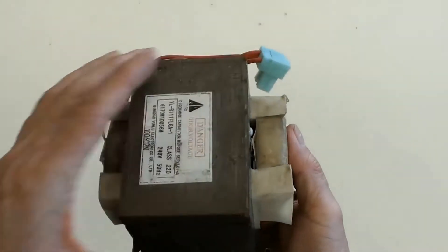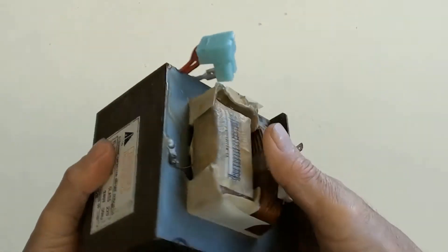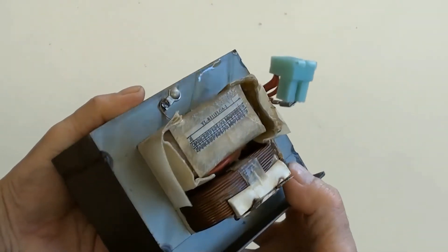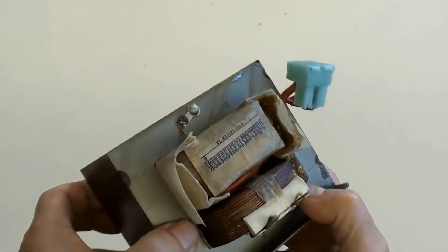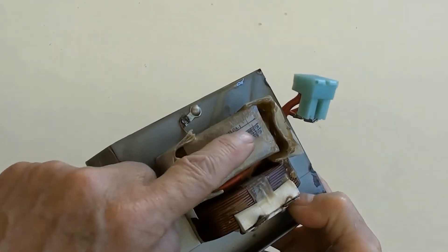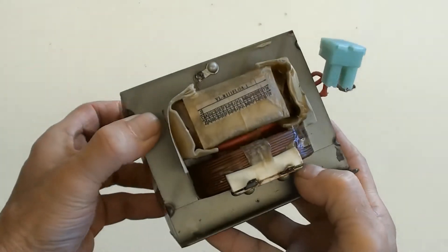This is a workable transformer from a recycled microwave oven. This coil is the primary one which will be reused, and that is the secondary coil which will be stripped off and redone.